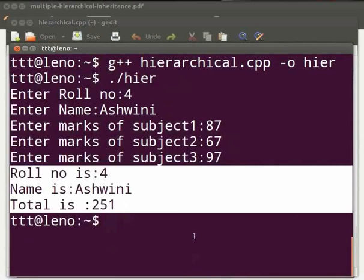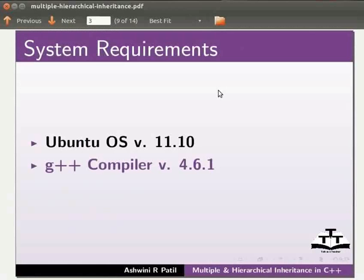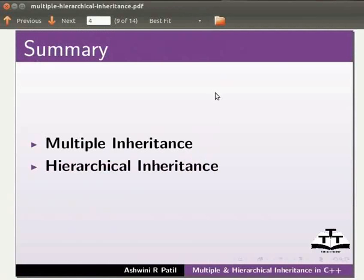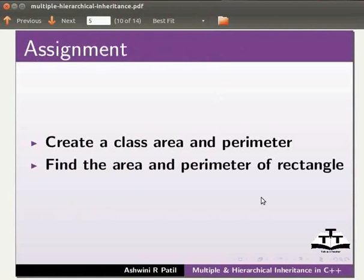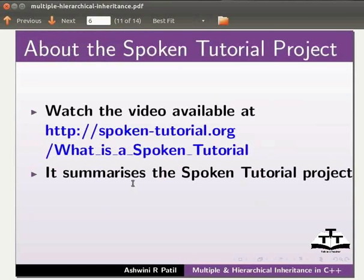This brings us to the end of this tutorial. Let us summarize. In this tutorial we learnt multiple inheritance and hierarchical inheritance. As an assignment, create classes area and perimeter, and find the area and perimeter of a rectangle.